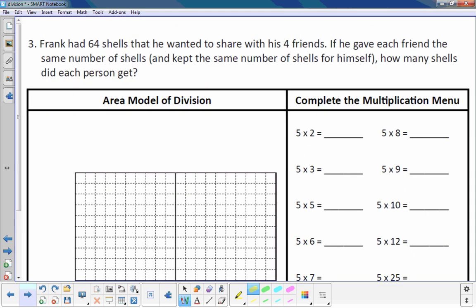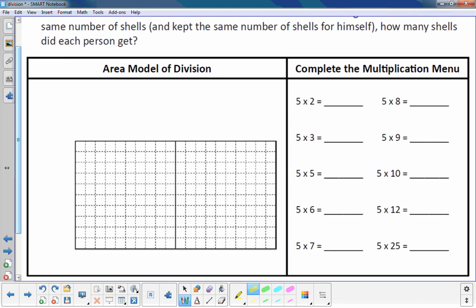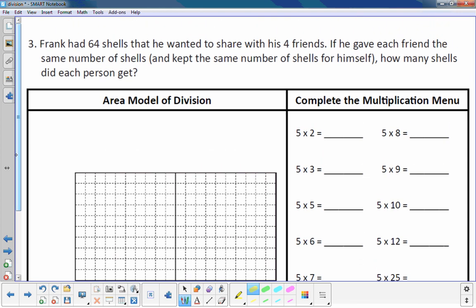Frank had 64 shells that he wanted to share with his 4 friends. If he gave each friend the same number of shells and kept the same number of shells for himself, how many shells did each person get? All right. Well, I see. I noticed that Mr. Knowles has a multiplication menu for 5. But wait a minute. There's 4 friends. I think he made a mistake. Sometimes he makes mistakes. Yep. I see. There's 4 friends. Hmm. I wonder why he did that. What to tell him. 4 friends. If he gave each friend the same number of shells. Oh, wait a minute. And kept the same number of shells for himself. Well, that would be 5 people. 5 people are going to share these shells.